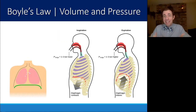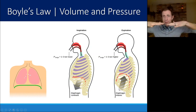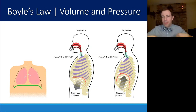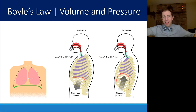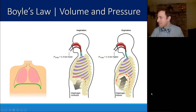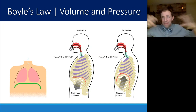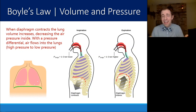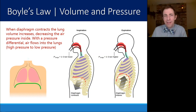An example of Boyle's Law is breathing. When you breathe, your diaphragm contracts, which increases the volume of your lungs. If the lungs have a larger volume, their pressure decreases. If the pressure inside your lungs is lower than atmospheric pressure outside, air is drawn from high pressure to low pressure, allowing you to inhale. If you then relax your diaphragm, the volume of the lungs decreases, the pressure gets bigger, and that air is expelled. We breathe by creating a pressure differential using a change in volume.